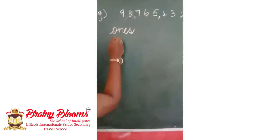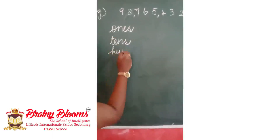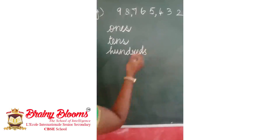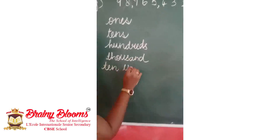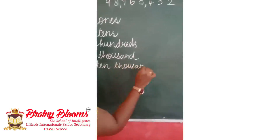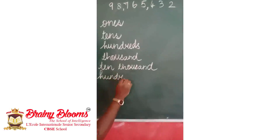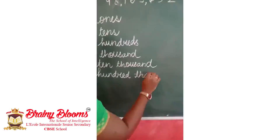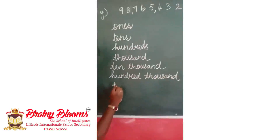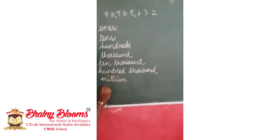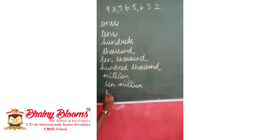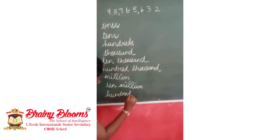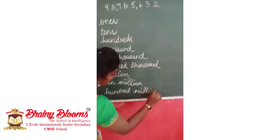In the international system, the place values are: ones, tens, hundreds, thousands, ten thousands, hundred thousands, million, ten million, hundred million, and it goes on.